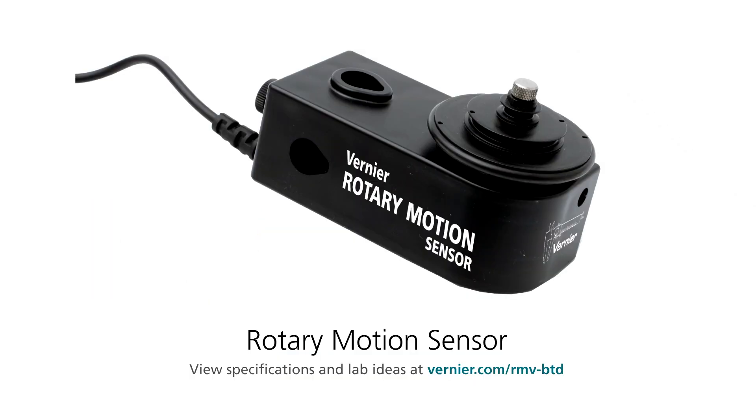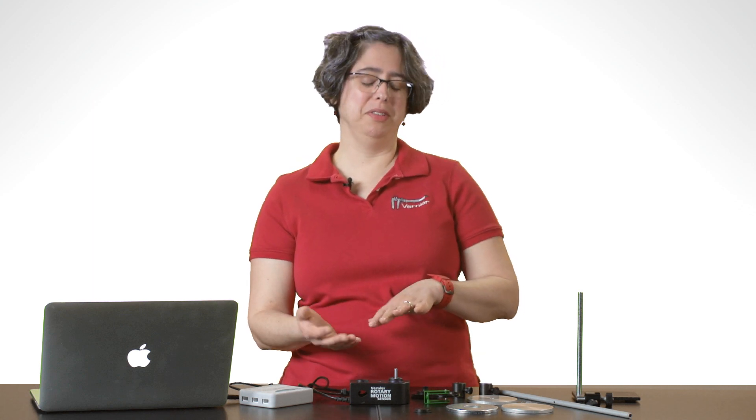Hi, I'm Fran. I'm here to talk to you about Vernier's Rotary Motion Sensor, which is a versatile little digital sensor that will let you measure rotation in a variety of units: degrees, radians, revolutions.